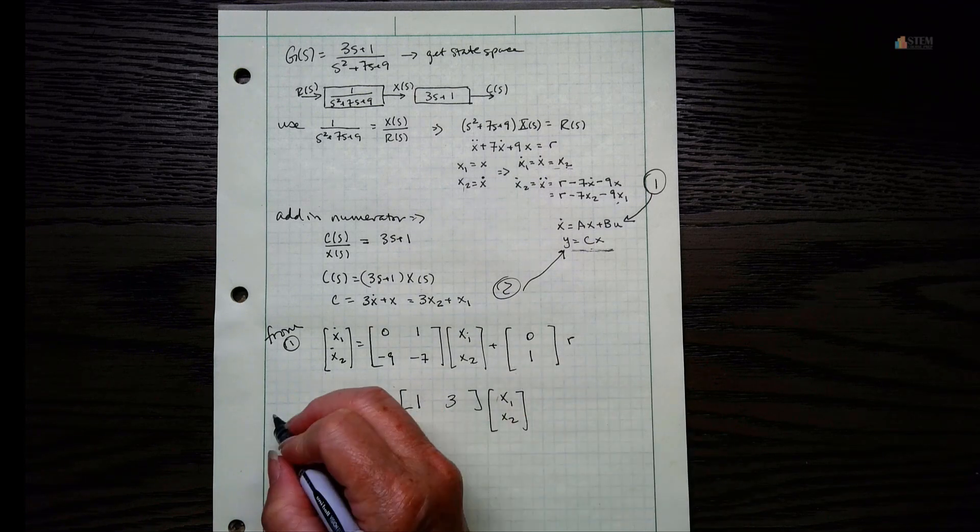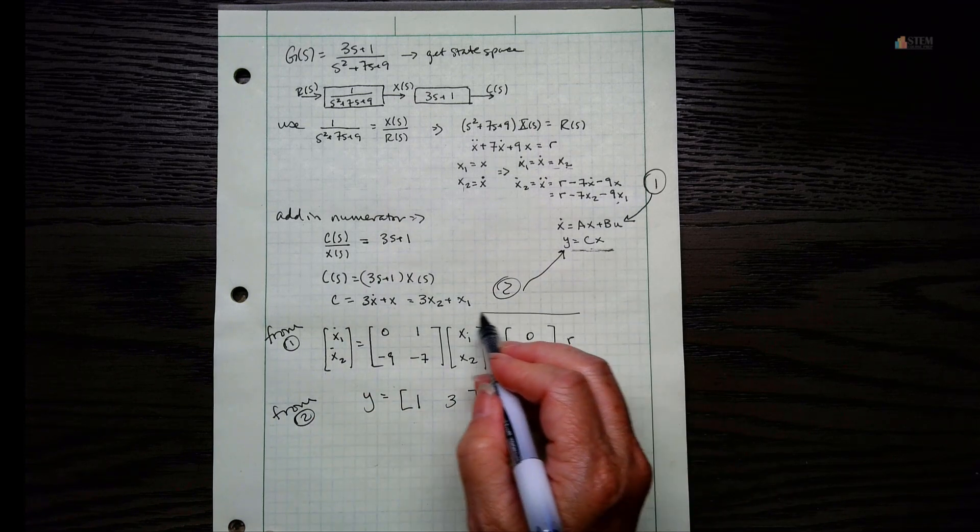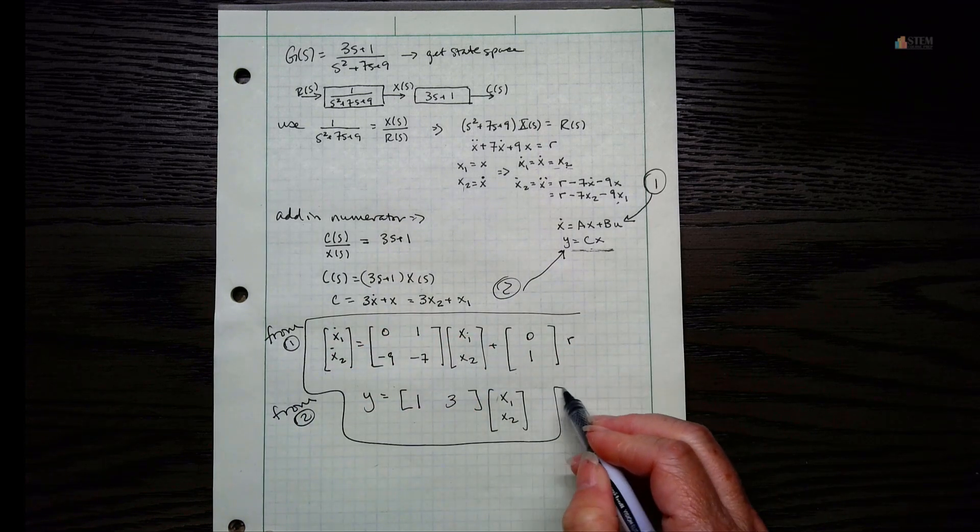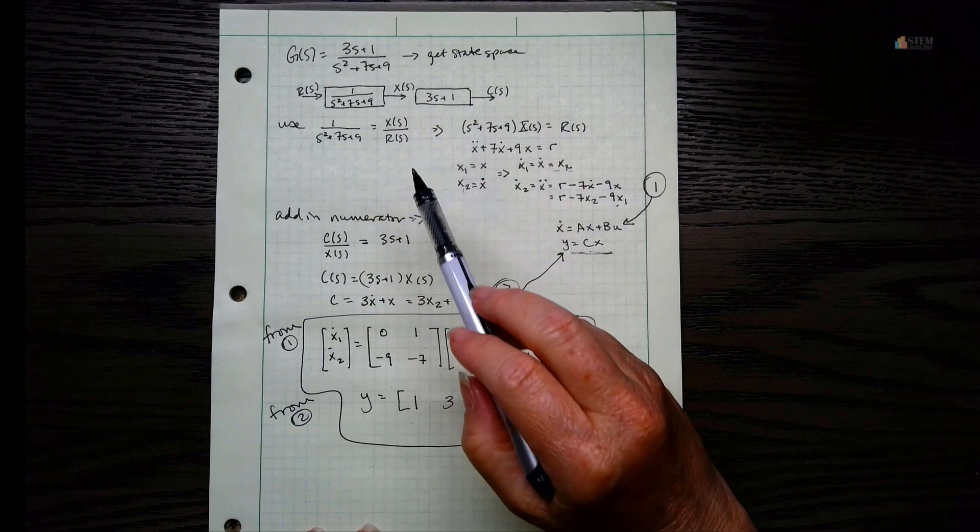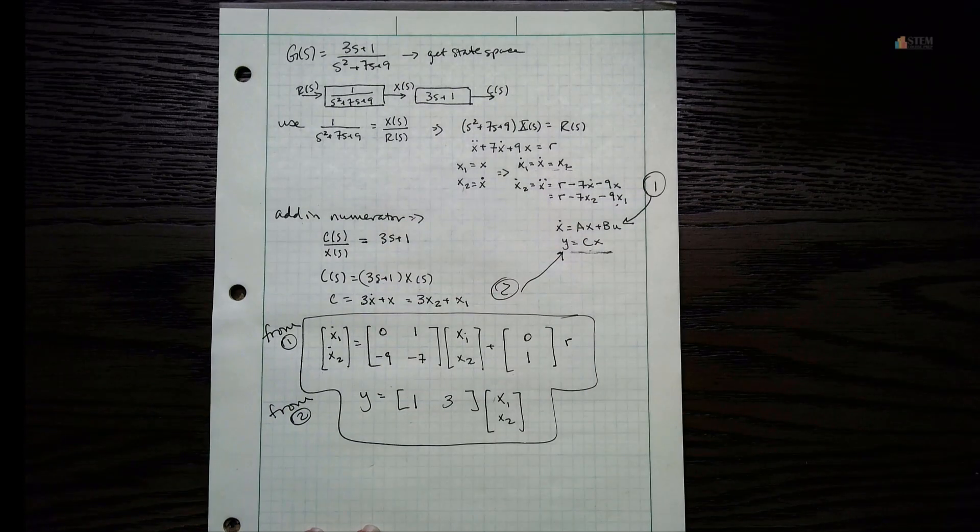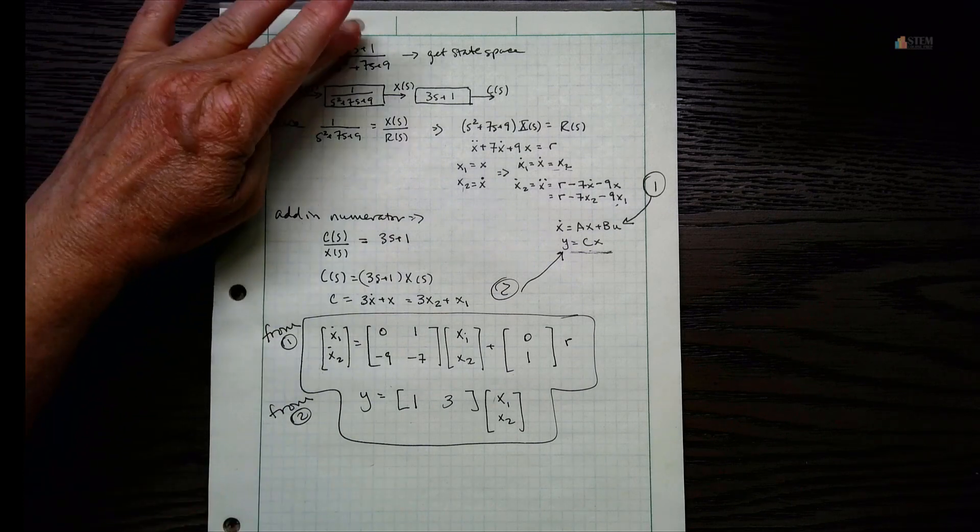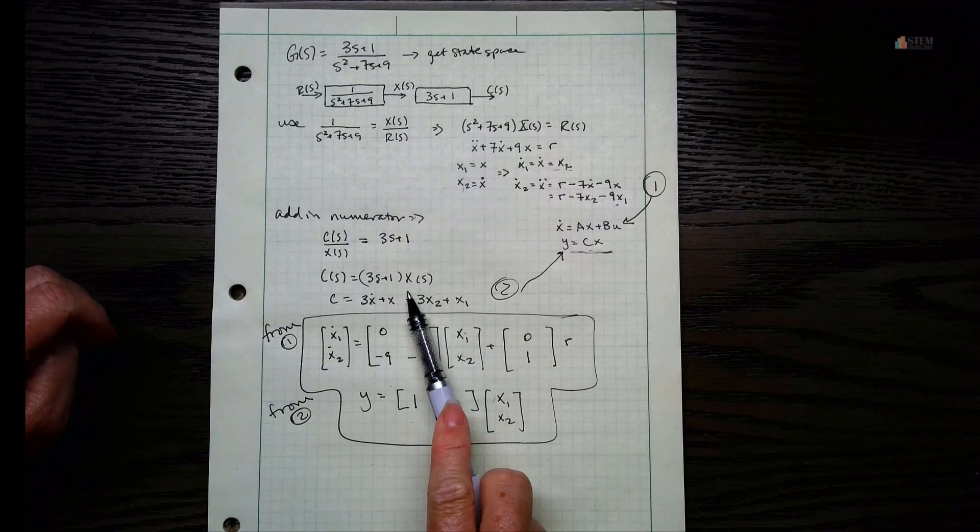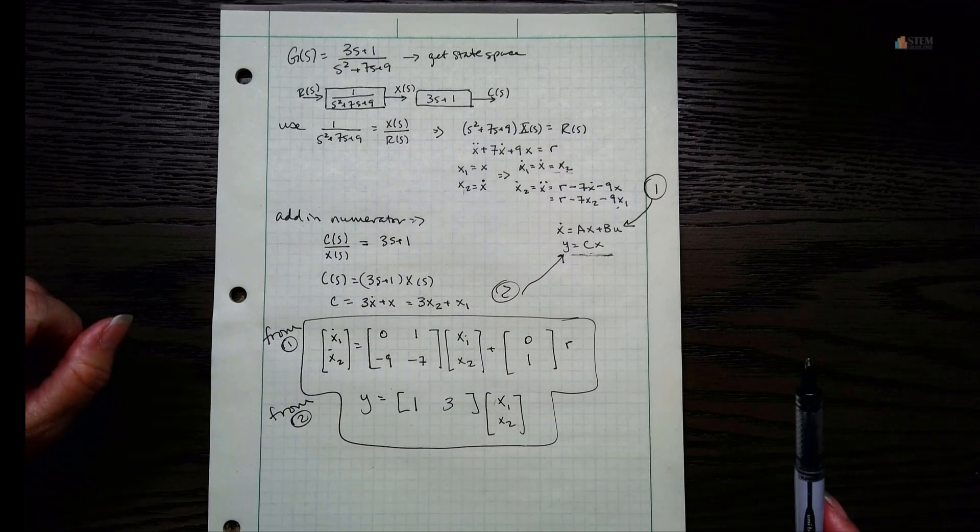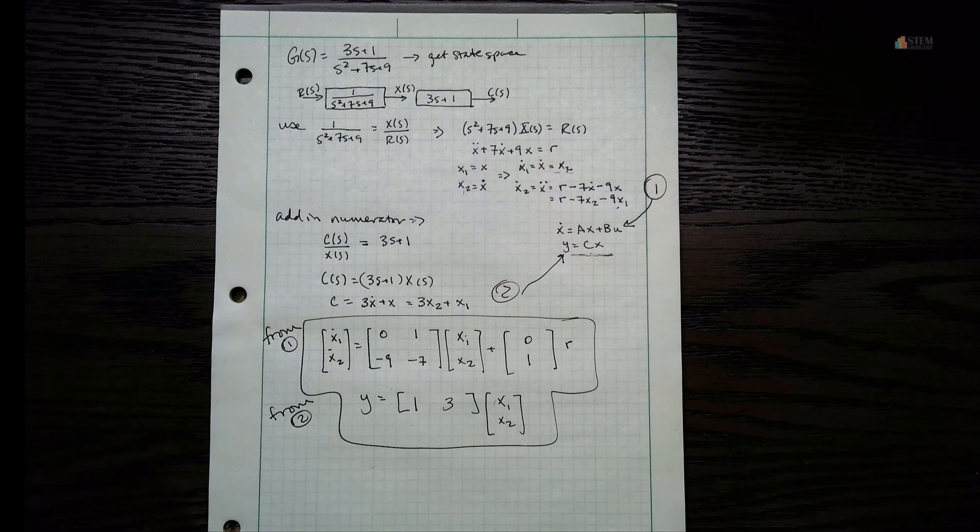So this one came from 2, and this whole thing then is the state space representation. And we found that using this transfer function. So it's pretty similar to what we did in the other video when we just had the constant in the numerator. The difference is you've got to separate it out and then do this piece separately like we did right here. So it's really not too much more complicated, but it is an extra step. So hopefully y'all found that helpful, and I will talk to y'all next time.